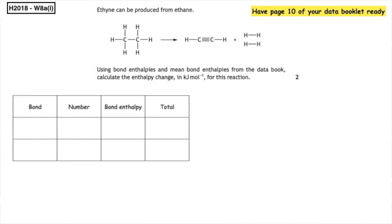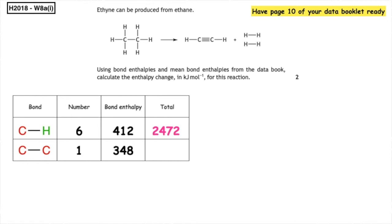The bonds to break in the reactants are the C–H bonds. From the structure provided there are 6; page 10 gives a bond enthalpy of 412, so 6 × 412 = 2472. There is also a C–C single bond — 1 of those — with a bond enthalpy of 348, so 1 × 348 = 348. Adding these gives a total of +2820, because you need to put energy in to break bonds, making it an endothermic process.